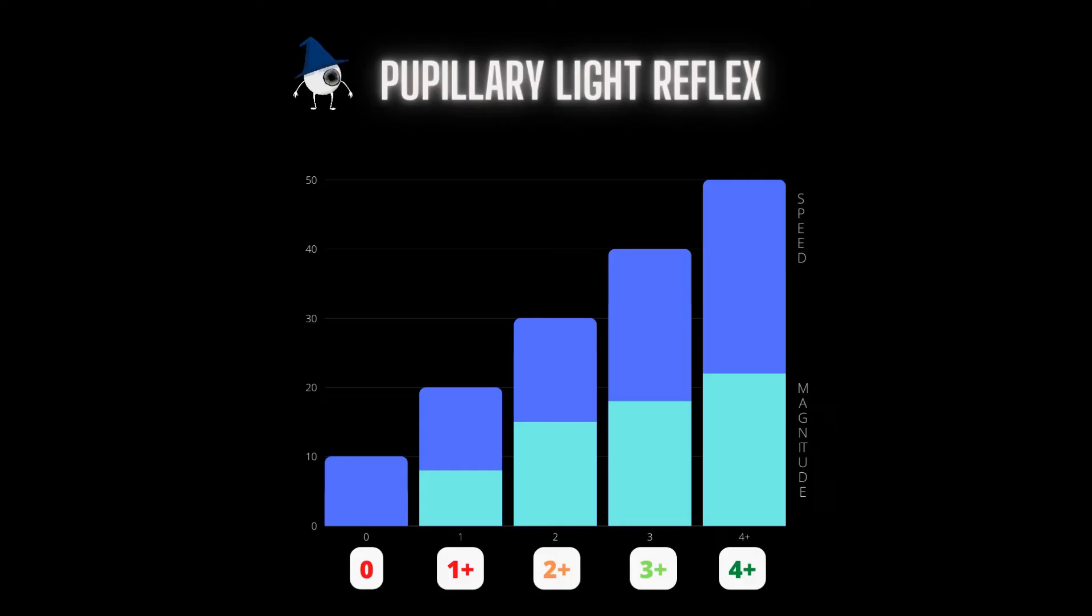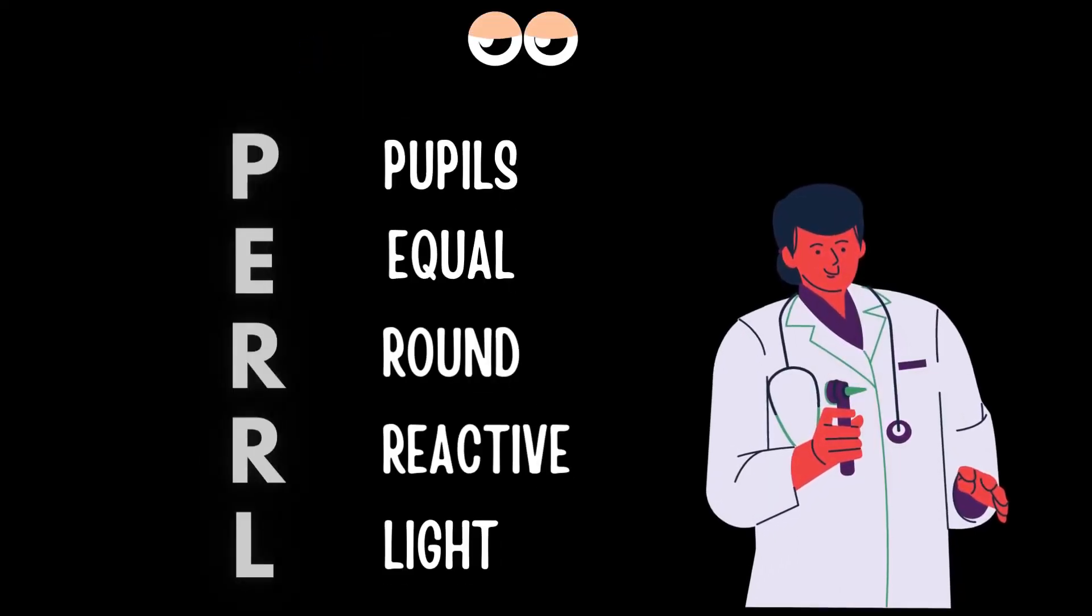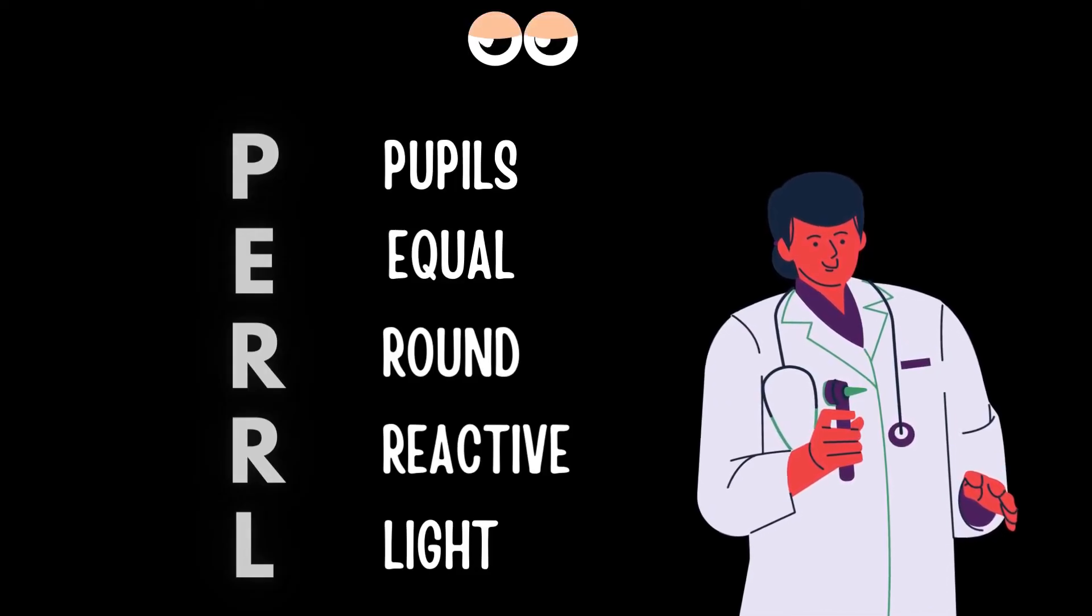Commonly, clinicians document PERRLA saying the pupils are equal, round, and reactive to light or PERL, pupils equal and reacting to light.